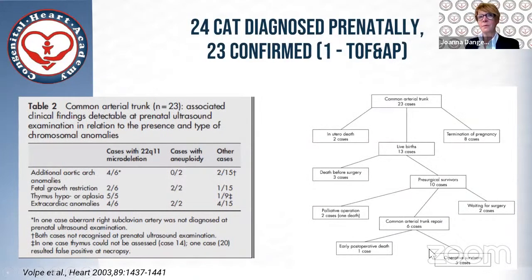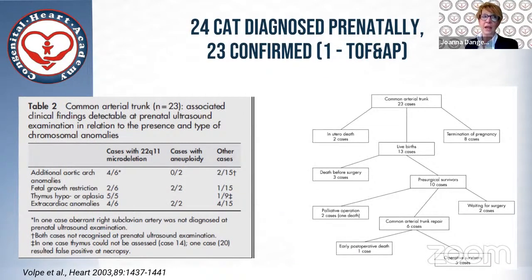It is important to know that fetal series are different than surgical series, because many fetuses just do not survive to delivery and some don't survive until operation. When we diagnose common arterial trunk early in pregnancy, we really don't know the outcome, and we should rely on fetal series, not surgical series.